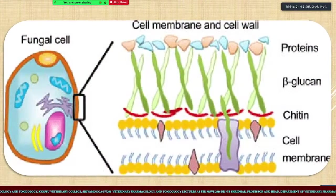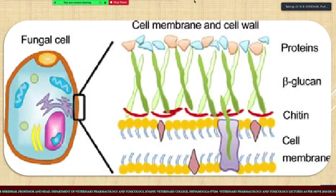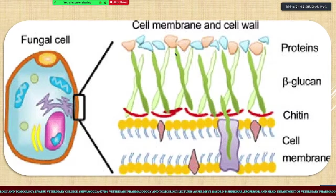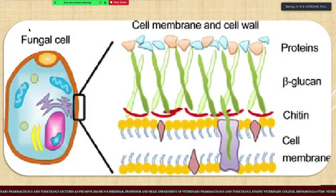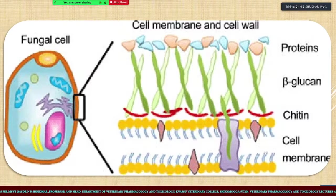This slide explains how the fungal cell looks. The fungal cell contains well-developed mitochondria and nucleus. The outer coat consists of the cell membrane and cell wall. The cell membrane is located here, and all layers together form the cell wall. The outer layer is proteins of different types. The middle one is beta-glucan, and there is a chitin structure. This is separated from the cell membrane and has less susceptibility to cell membrane lysis drugs.